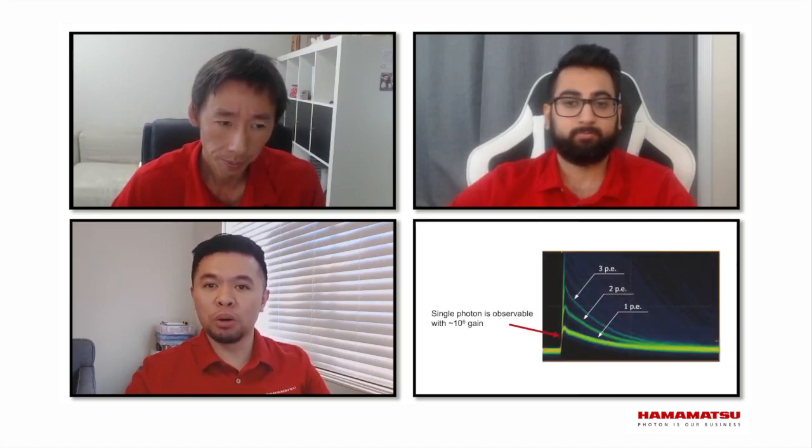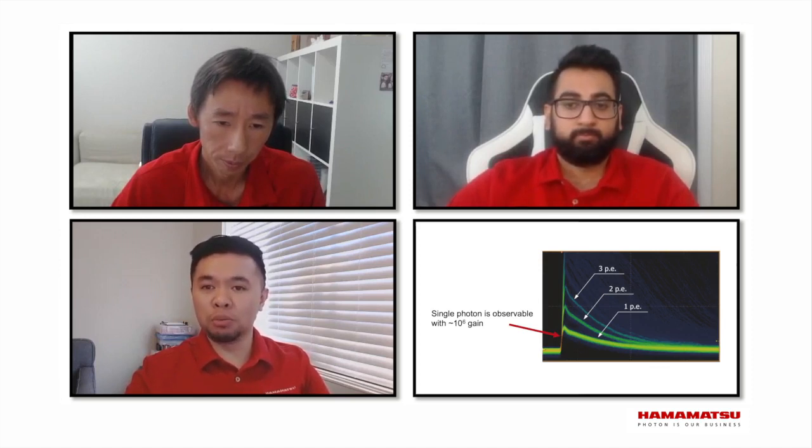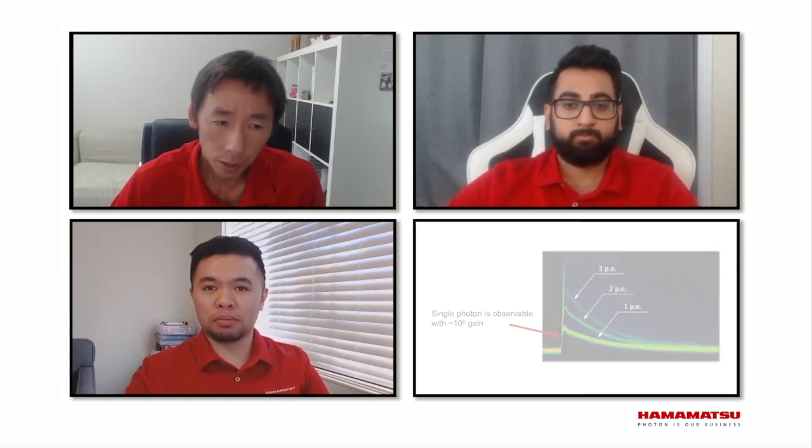Why would someone need that much gain? With that much gain, you can actually see an individual pulse from one detected photon in an oscilloscope. It's a huge benefit to be able to see a signal from a single photon. But can't somebody just design an external amplifier with the same kind of gain?